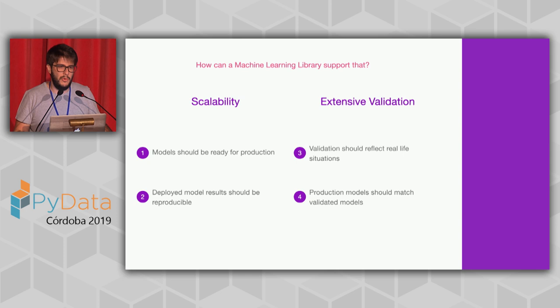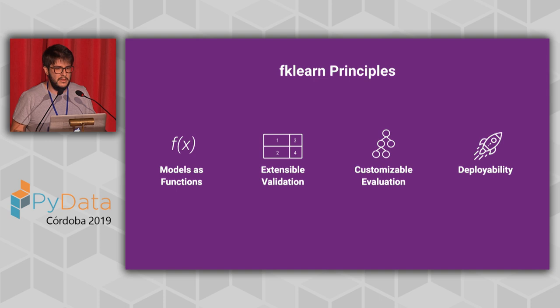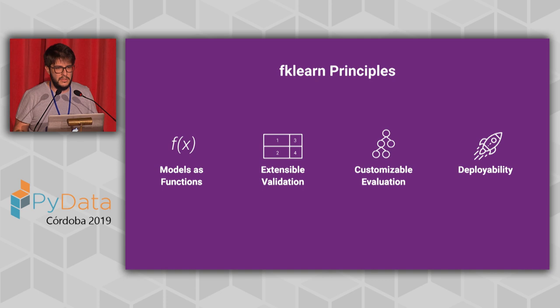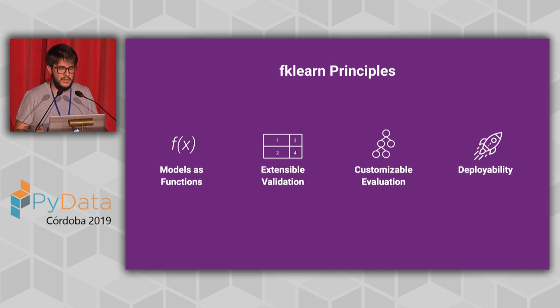So we had these two big challenges. From that, we decided that the main pillars of the library would be: first, models as functions. We decided to go for a functional approach, and the reason is basically to make use of all the advantages of functional programming — immutability, pure functions, higher-order functions — which guarantees way more trustability when we put a model in production. We know that because it's a pure function, the results are always the same. And it's very easy to put models in production because you basically have a function that you pass to your service.